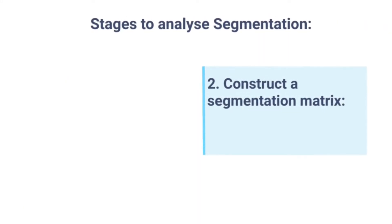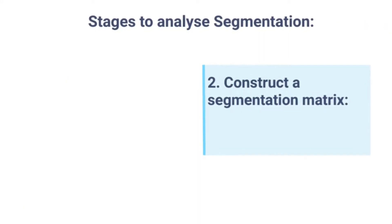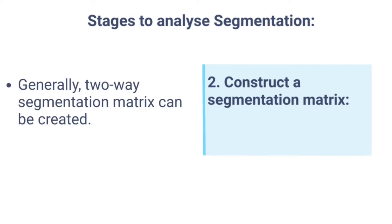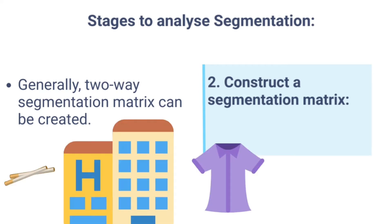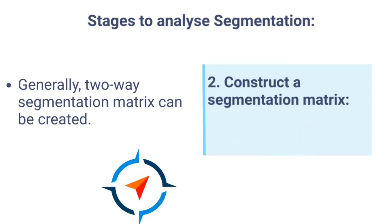Constructing a segmentation matrix is the second stage. After the segments are identified, a segmentation matrix — generally two-way — can be created. For example, ITC could create a matrix based on the nature of products like cigarettes, hotels, textile, and paper, against geographies like north, east, west, and south. Another way could be to create a matrix using products and distribution channels like wholesale, retail, and direct.